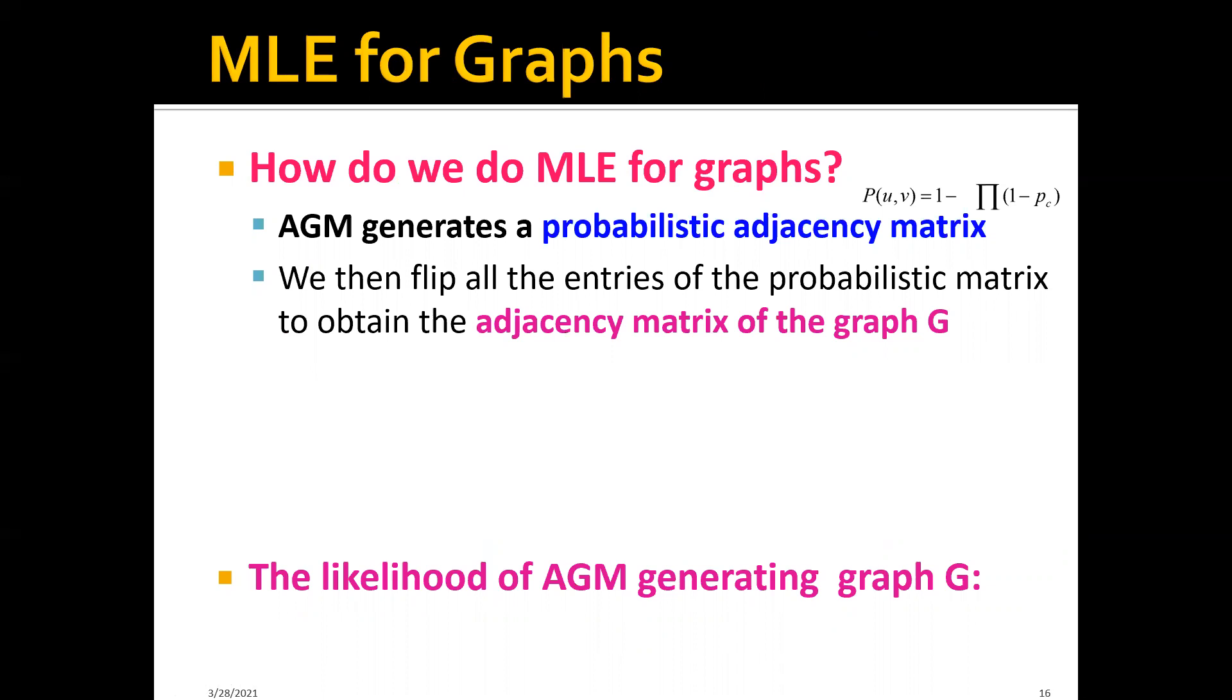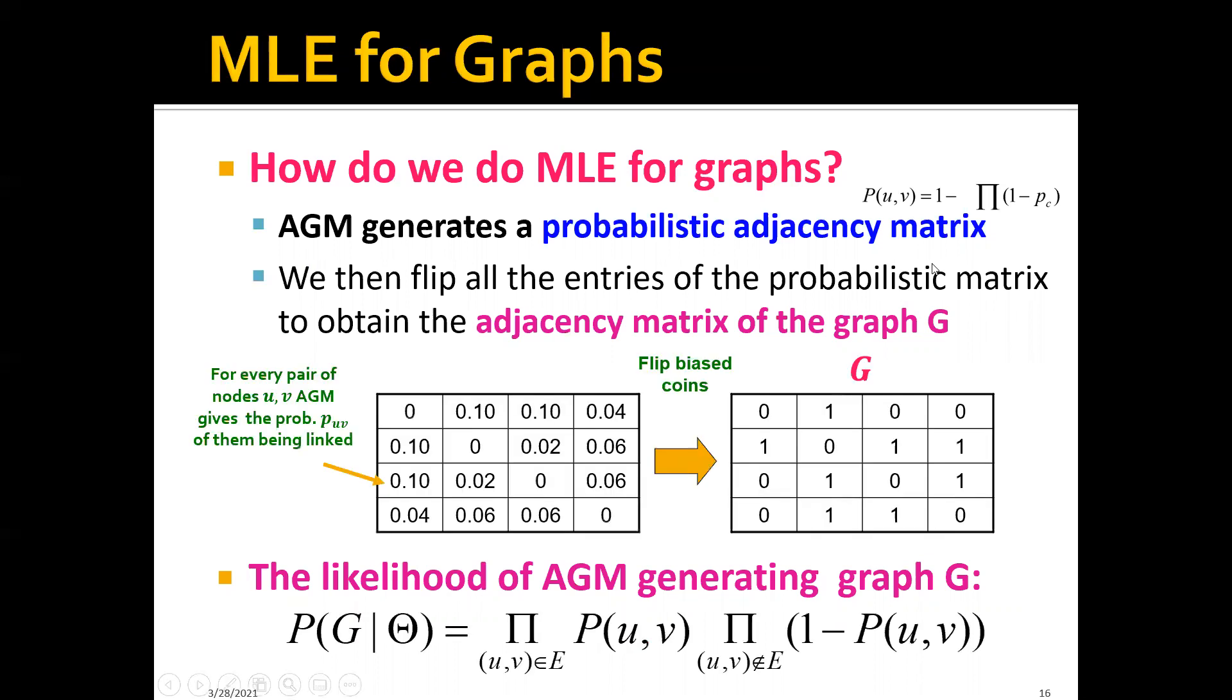Remember that previously we said that given the AGM parameters, we're actually able to compute the probability that there is an edge between any pair of nodes U and V. So basically we will have a probabilistic adjacency matrix something like this.